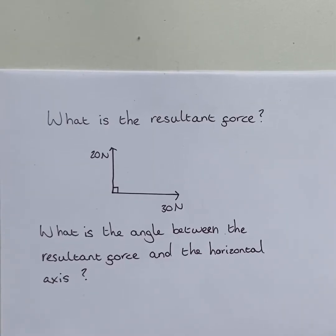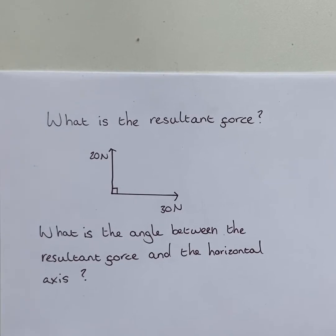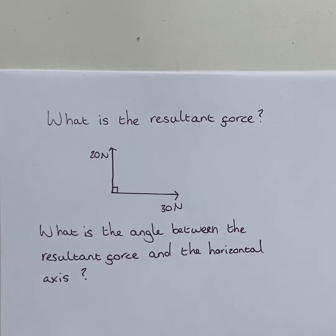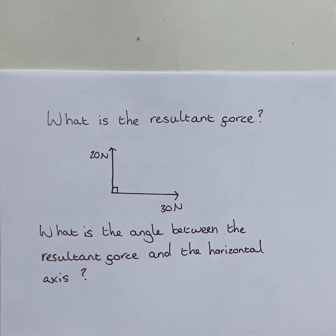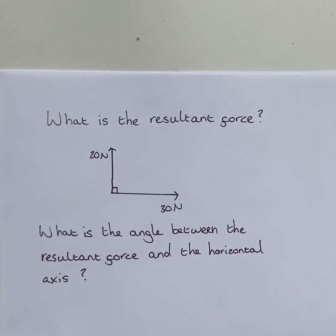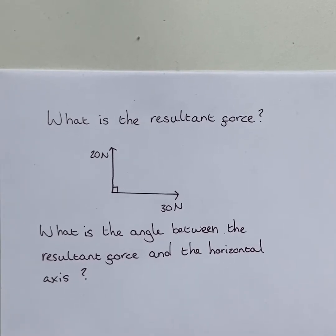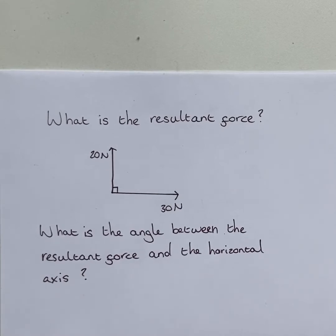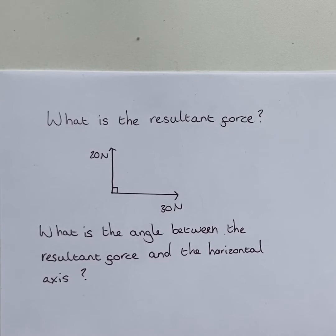In this first question, we have been asked to calculate the resultant force. We've been given a diagram showing that the upwards force has a magnitude of 20 newtons, the horizontal force has a magnitude of 30 newtons, and there's a right angle between them.